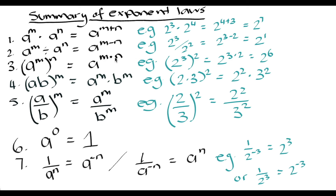The power of a power rule: if we have a base raised to an exponent which is all raised to another exponent, we write down the base and multiply the exponents. The product rule: if we have two bases all raised to one exponent, we distribute that exponent to each term — first base to the exponent multiplied by the second base to the exponent. The fraction rule: a fraction raised to an exponent equals the numerator raised to the exponent divided by the denominator raised to the exponent. Also, anything raised to the power of zero equals 1.